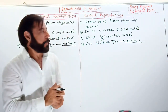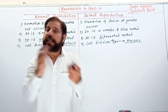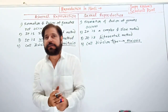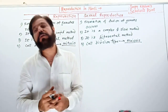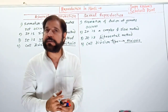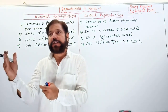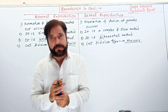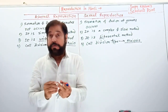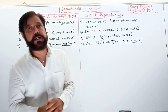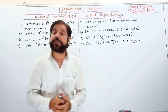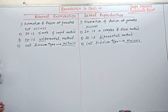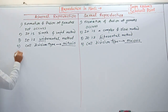In animals, the testes and ovaries are the sex organs (gonads or primary sex organs) where meiosis occurs. Testes produce sperms by meiosis, and ovaries produce eggs by meiosis. In this way, meiosis is a very important division in case of sexual reproduction.